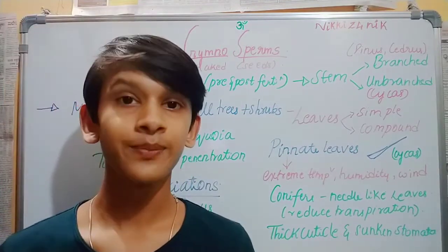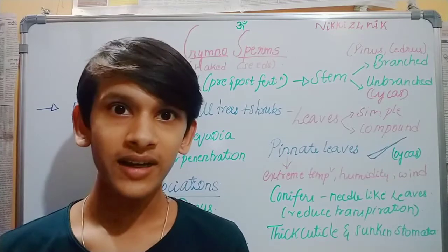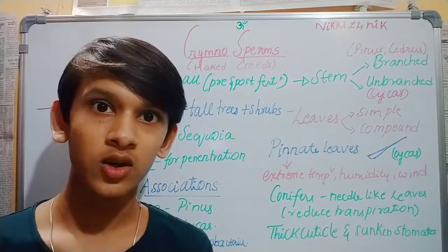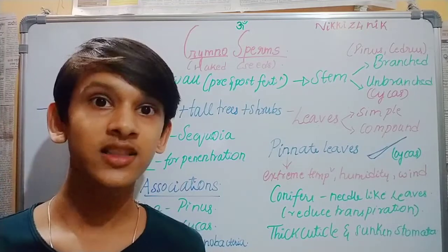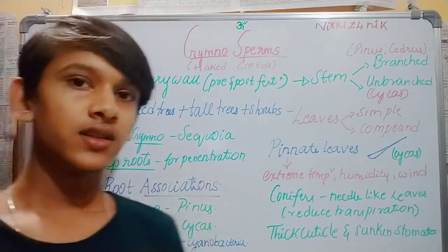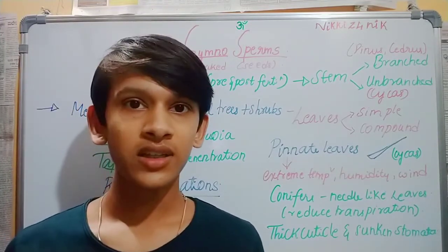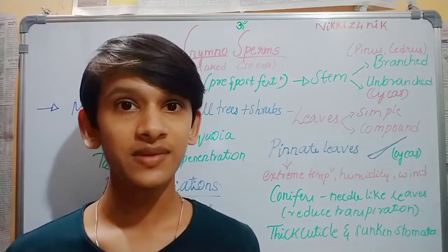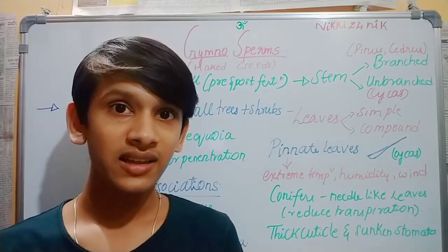Gymnosperms generally have tall trees, so they need a lot of water. Therefore, the root system is highly developed. The root system is a tap root system, which has a root cap so the roots can dig into the ground and hold the tree tightly. Because they are very tall trees, they need a strong hold. In gymnosperms, they also form root associations — that is, they associate with other organisms.